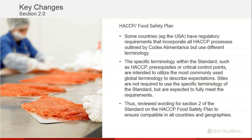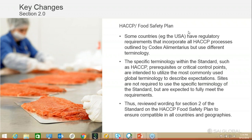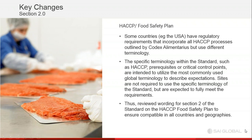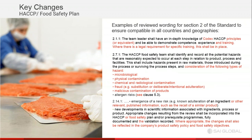There are subclauses under Section 2 that very effectively document and instruct how any food safety system should be built. The wording for Section 2 on the HACCP/Food Safety Plan has been reviewed to ensure compatibility in all countries and geographies. Key change 2.1.1 relates to the team leader: team leader training must now include any legal requirement for specific training. For example, if FDA requires that PCQI training is mandatory, we will look for the HACCP leader to have that training.